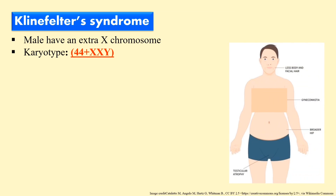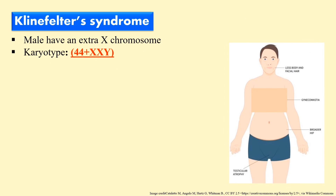Next, Klinefelter syndrome. This is due to the presence of an extra X chromosome. Generally, a normal male has the complement 44 plus XY, but in case of Klinefelter syndrome the karyotype will be 44 plus XXY, meaning one extra X chromosome is present.